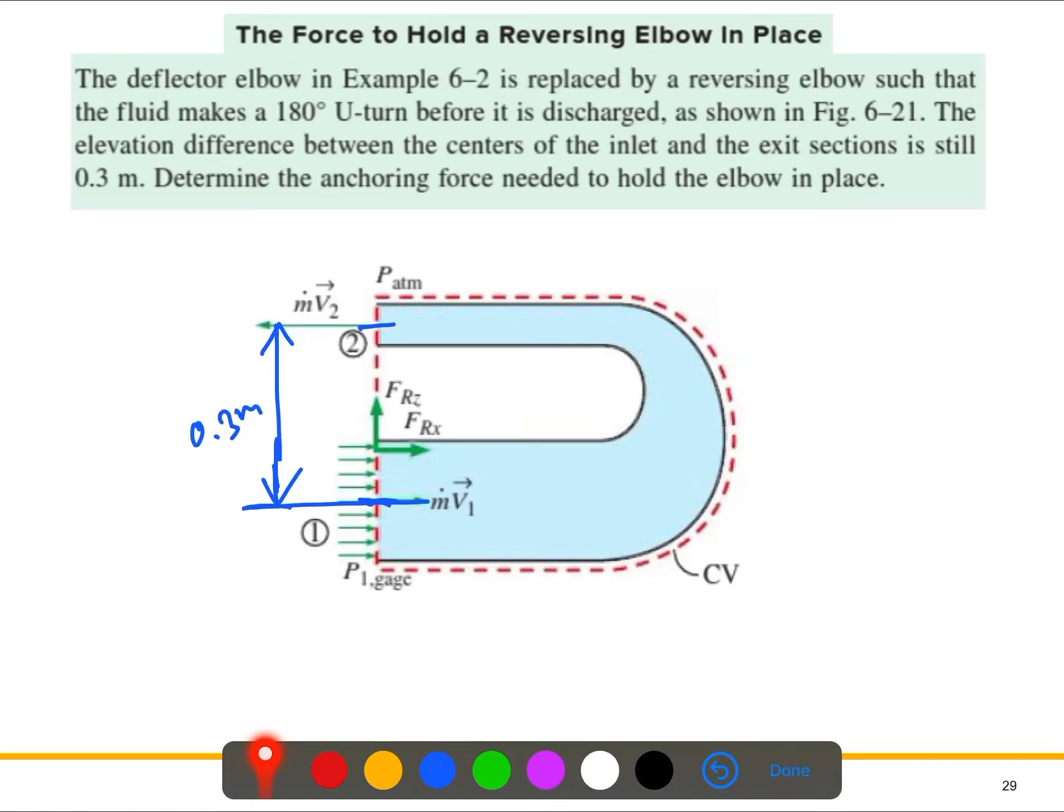Because no external force, no momentum flux are working actually along the vertical direction, like this z-axis. The Frz, the anchoring force at the connection of the elbow, is zero because no vertical force is acting here. The horizontal component we need to determine along the x-axis.